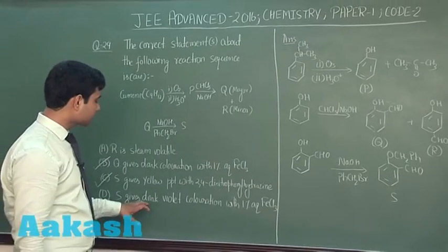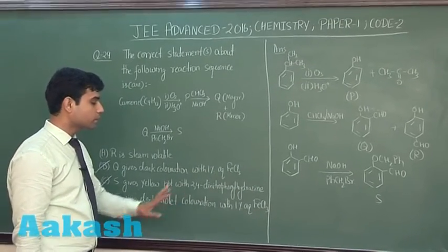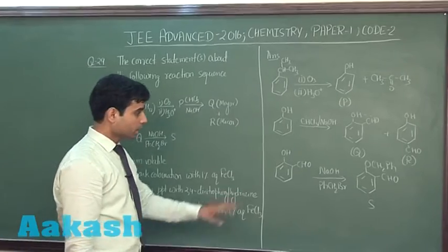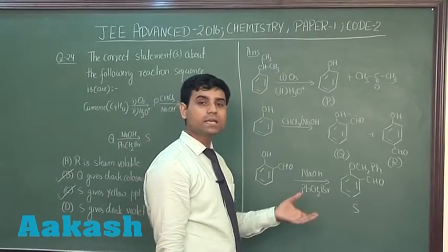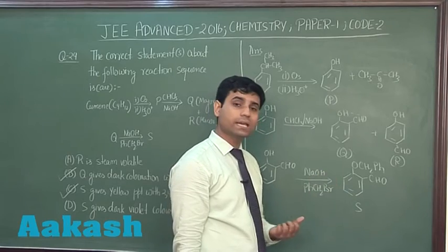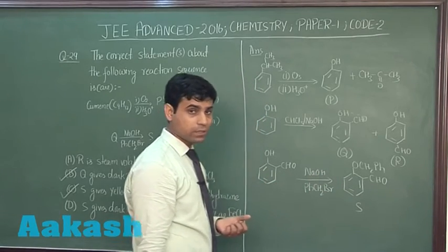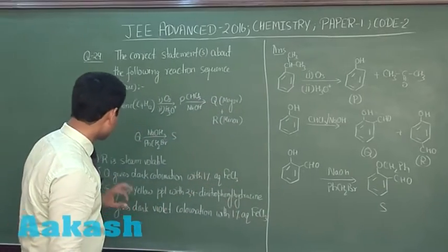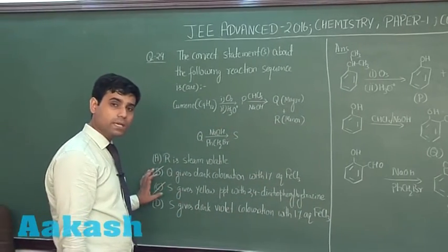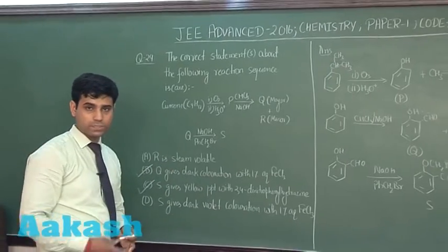Next option says S gives dark violet coloration with 1% FeCl3. In case of S, we do not have any free phenolic group. It will not give us any coloration with FeCl3. This option is incorrect. For this question, the correct answers are option B and option C. Now let us move to the next question.